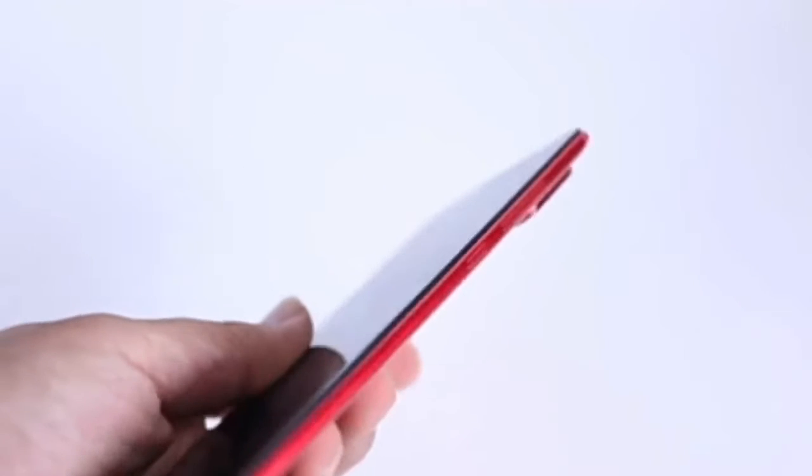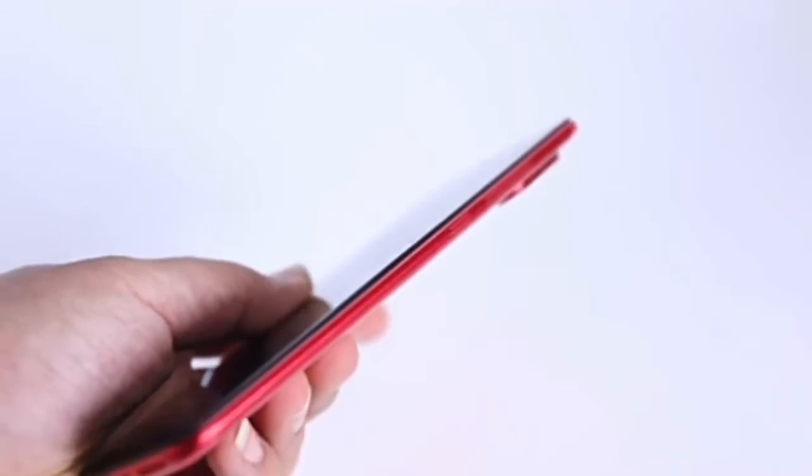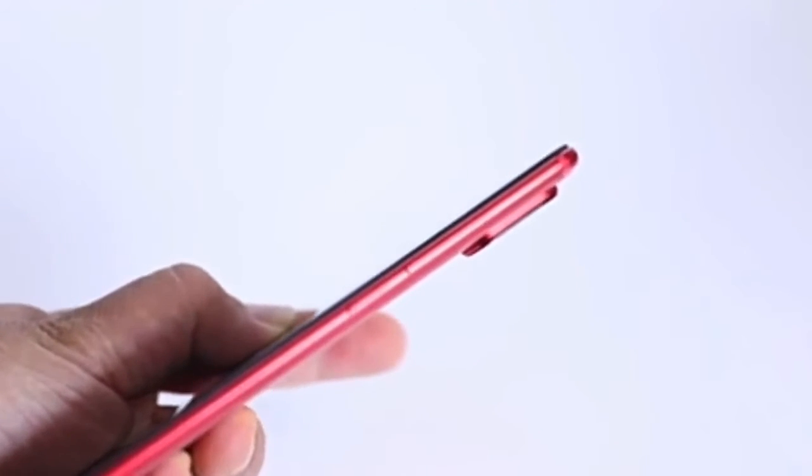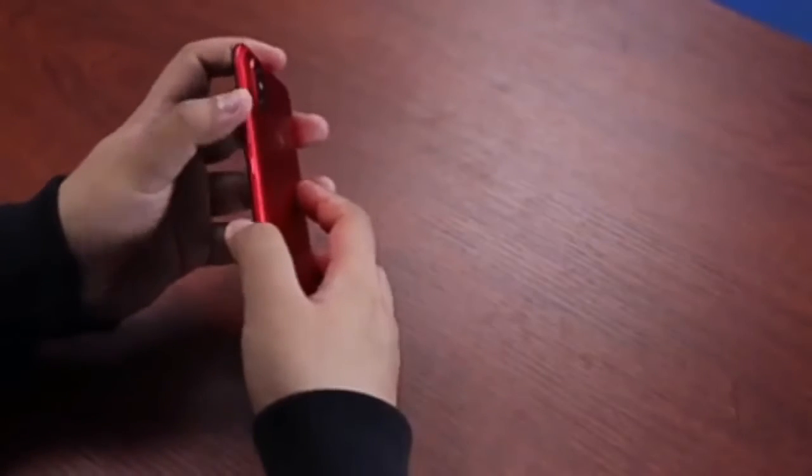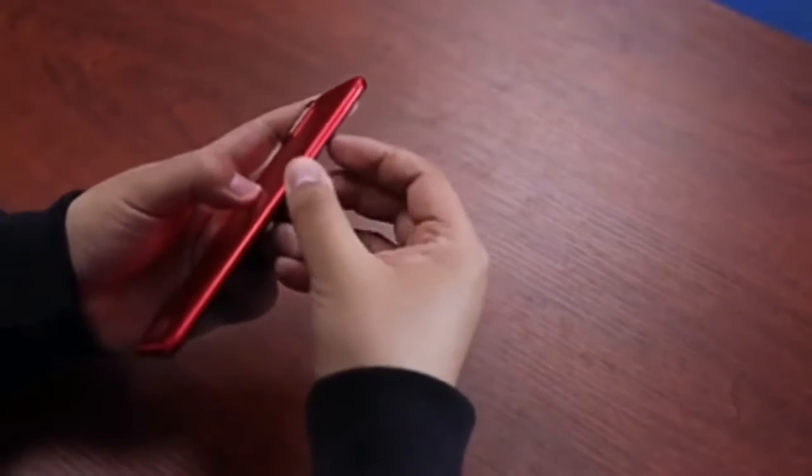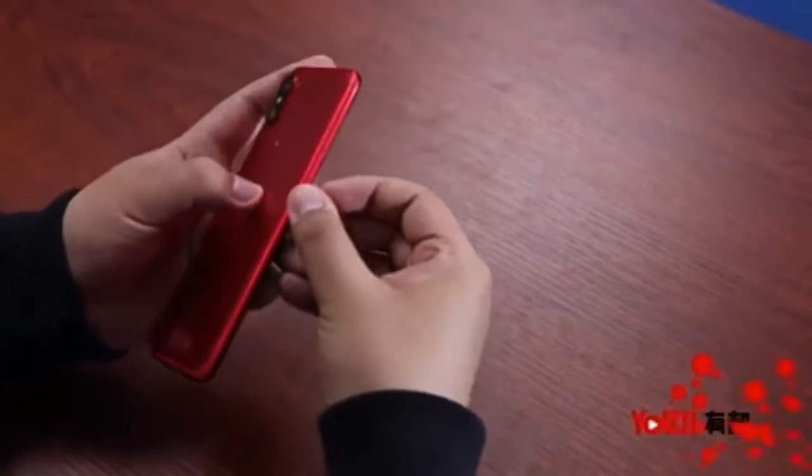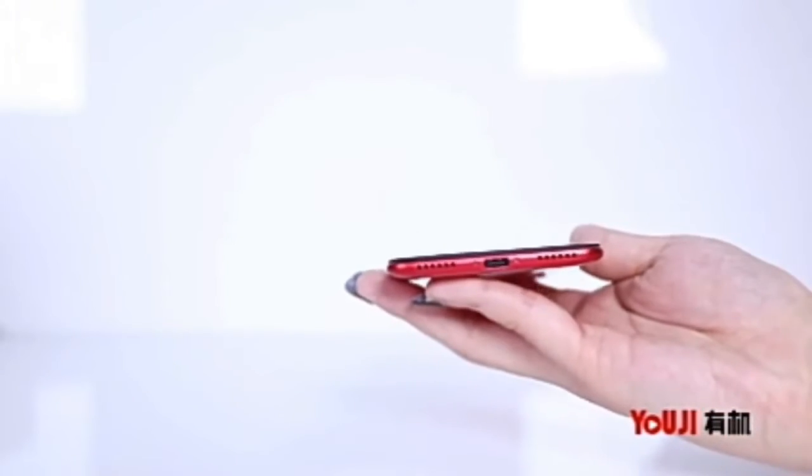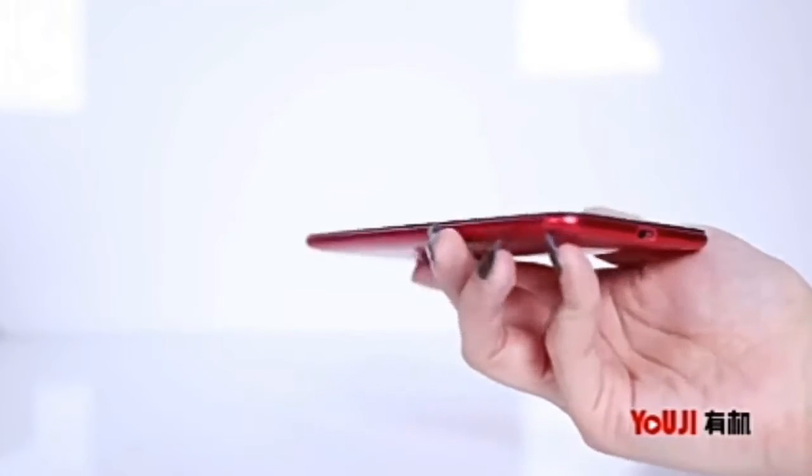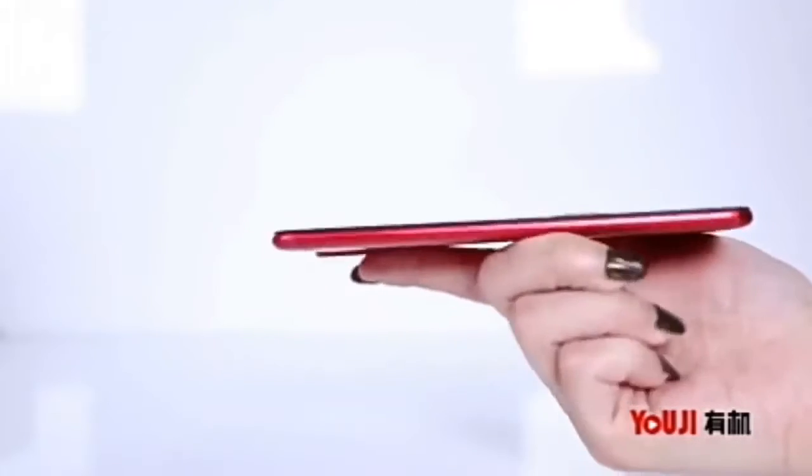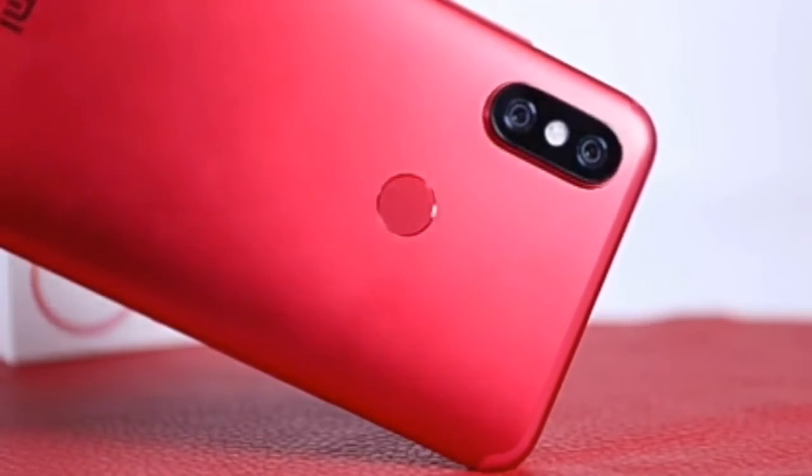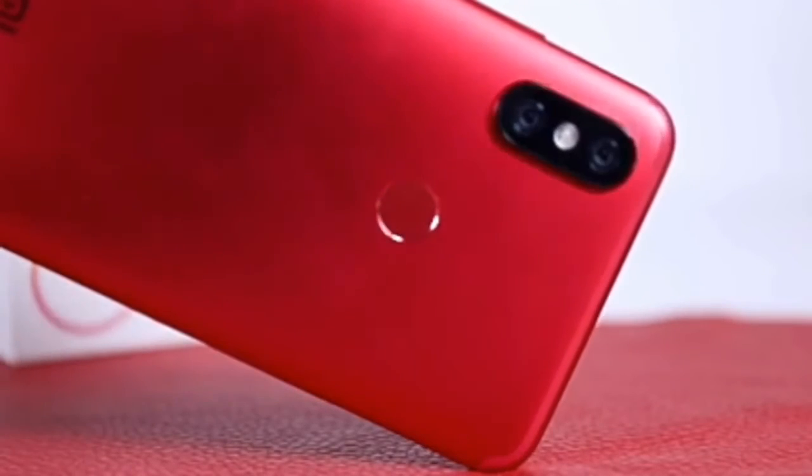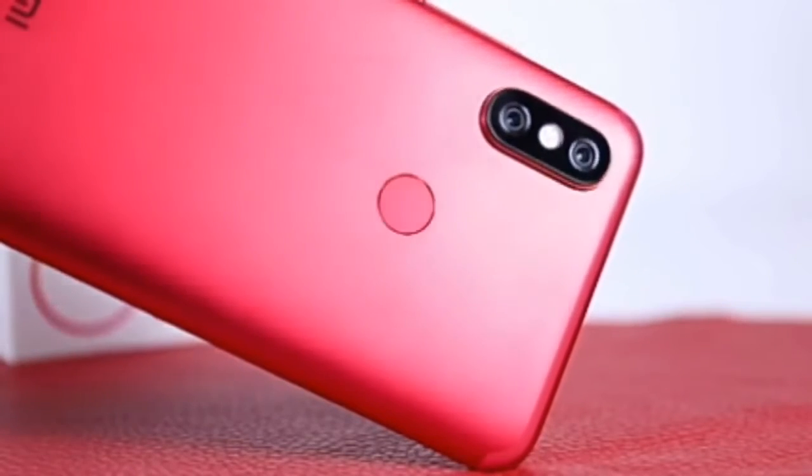The dual camera setup on the back includes an F1.75 aperture Sony IMX 486 sensor with 1.25 micrometer pixels and a secondary 20-megapixel sensor featuring an F1.75 aperture Sony IMX 376 with 2 micrometer pixels. The secondary sensor is a telephoto lens offering 2x lossless zoom.